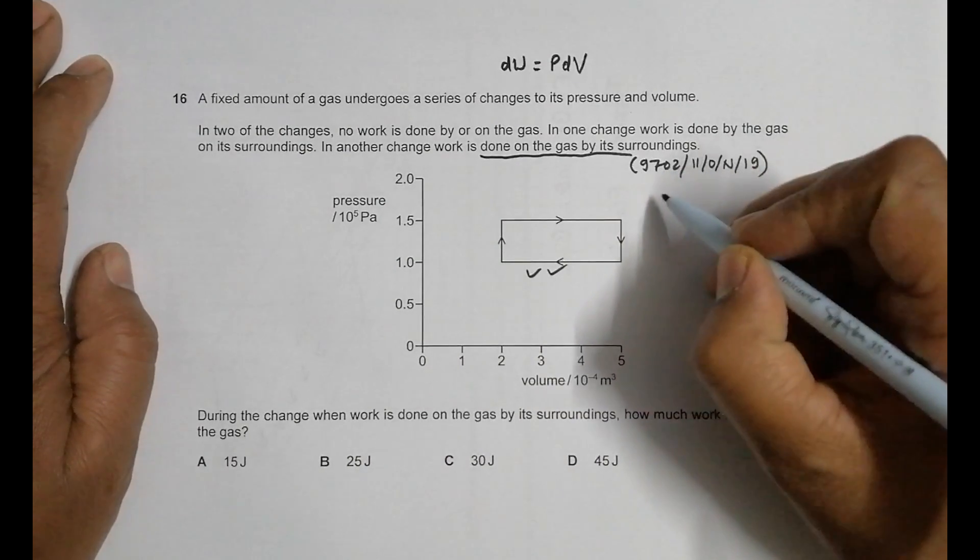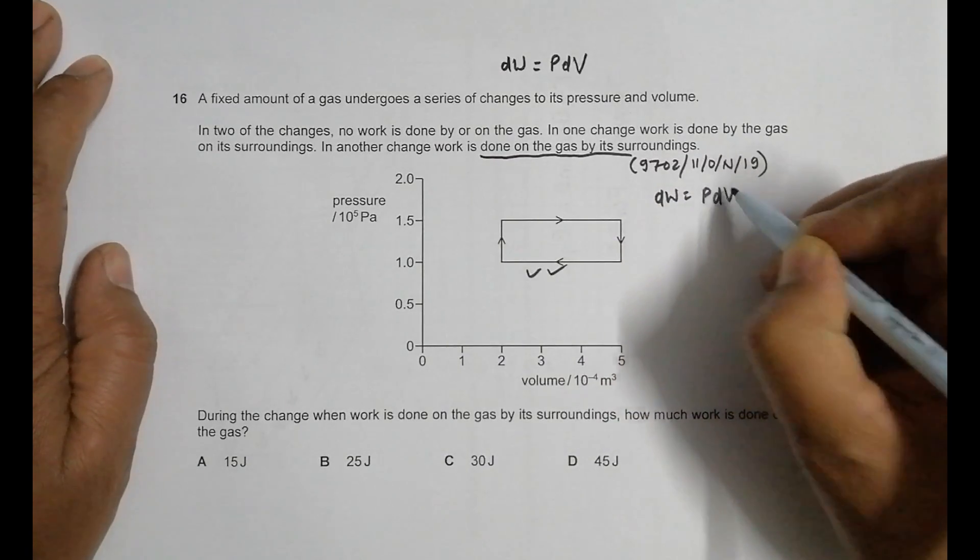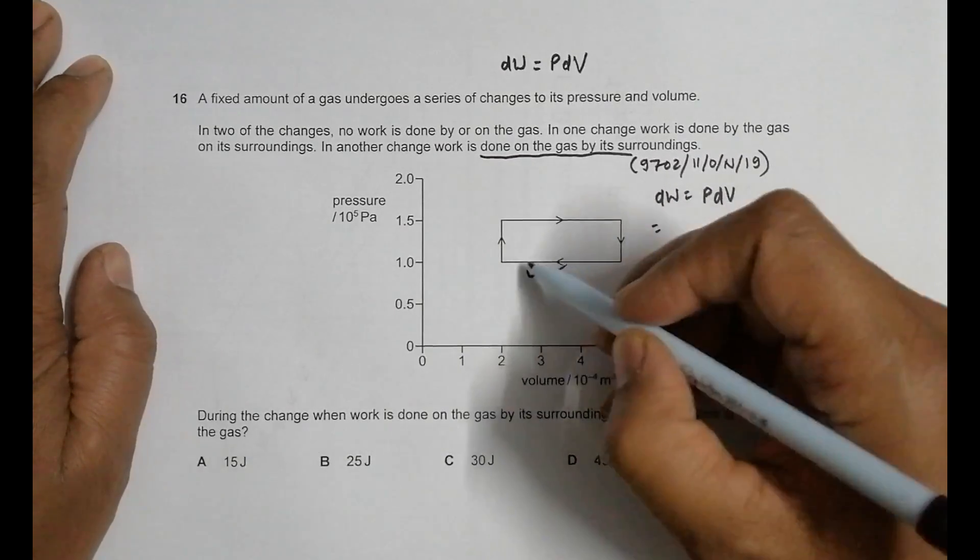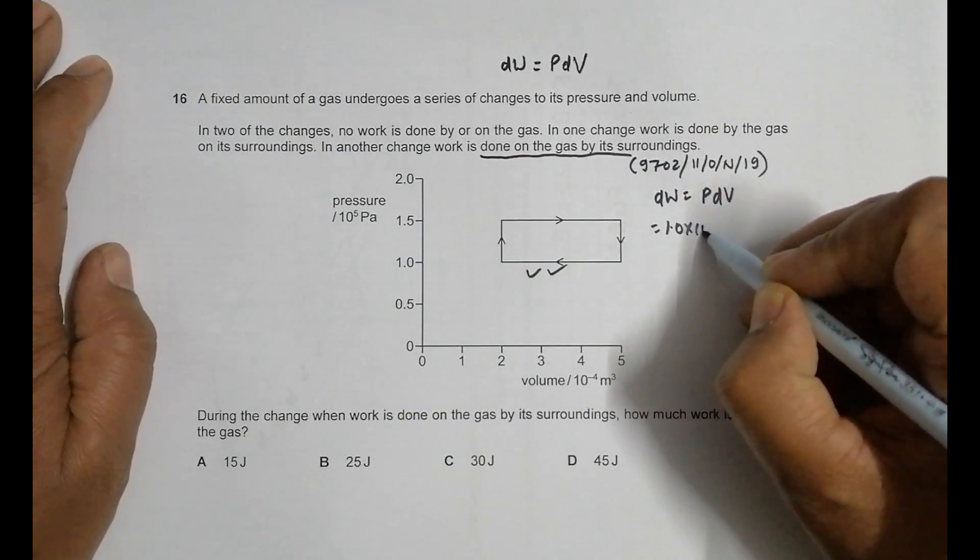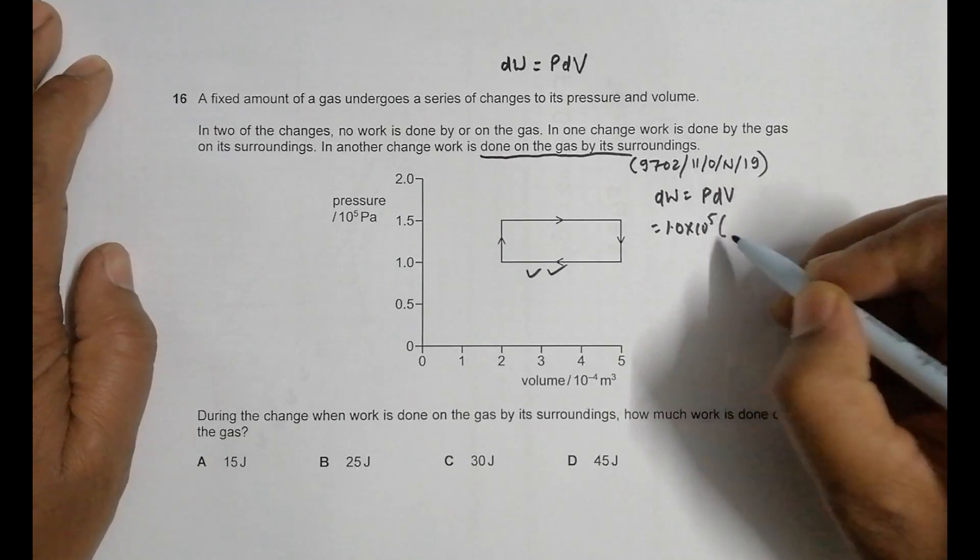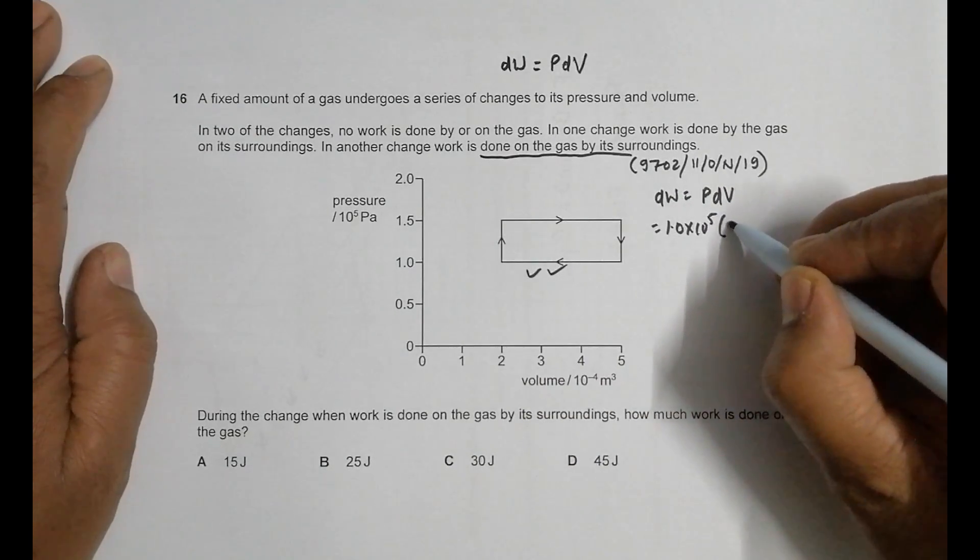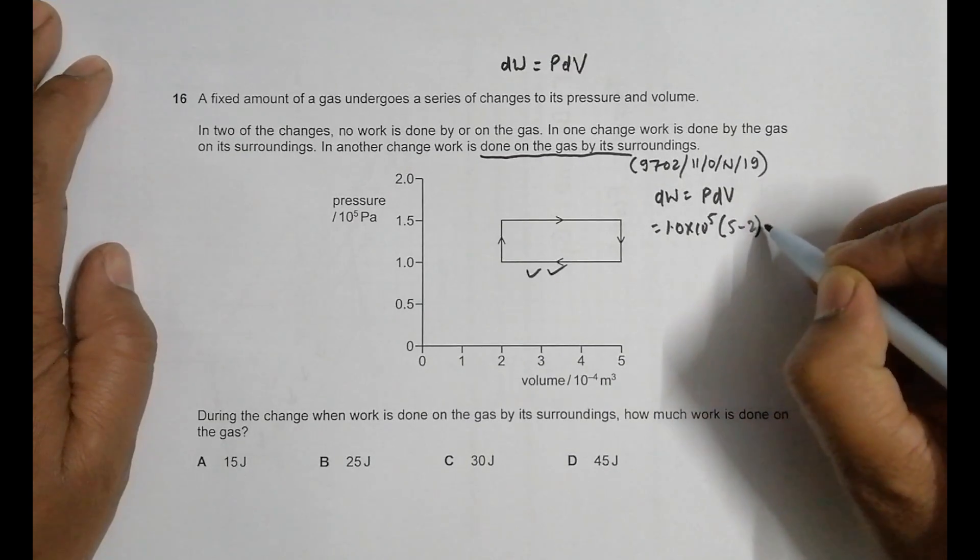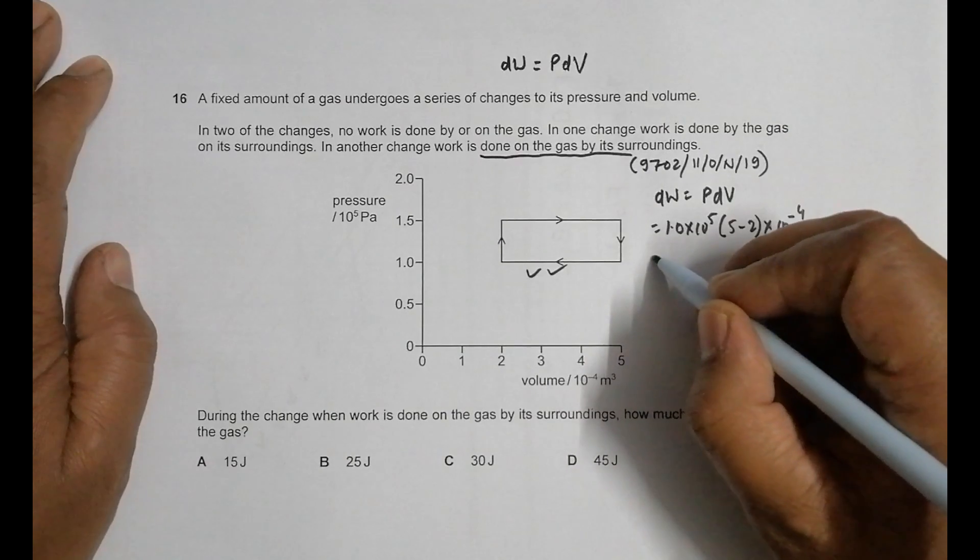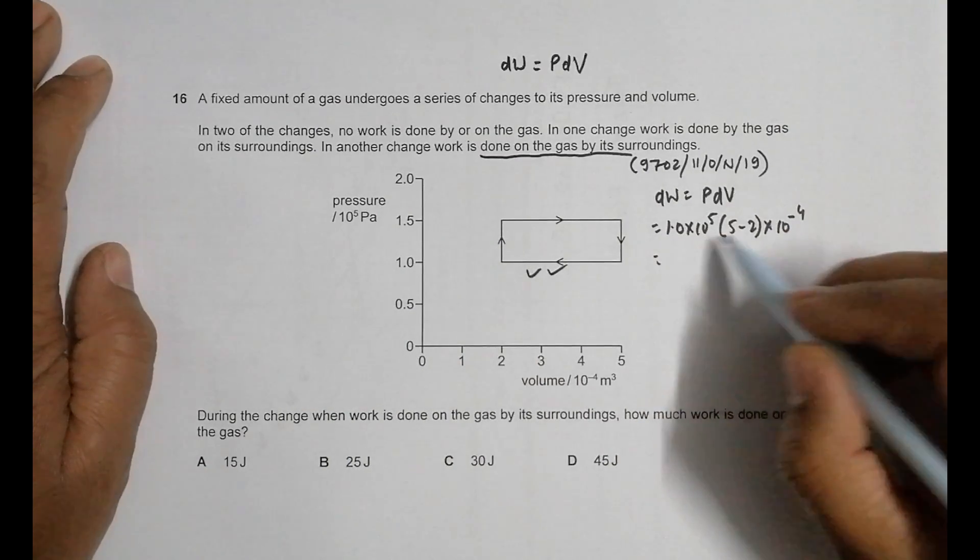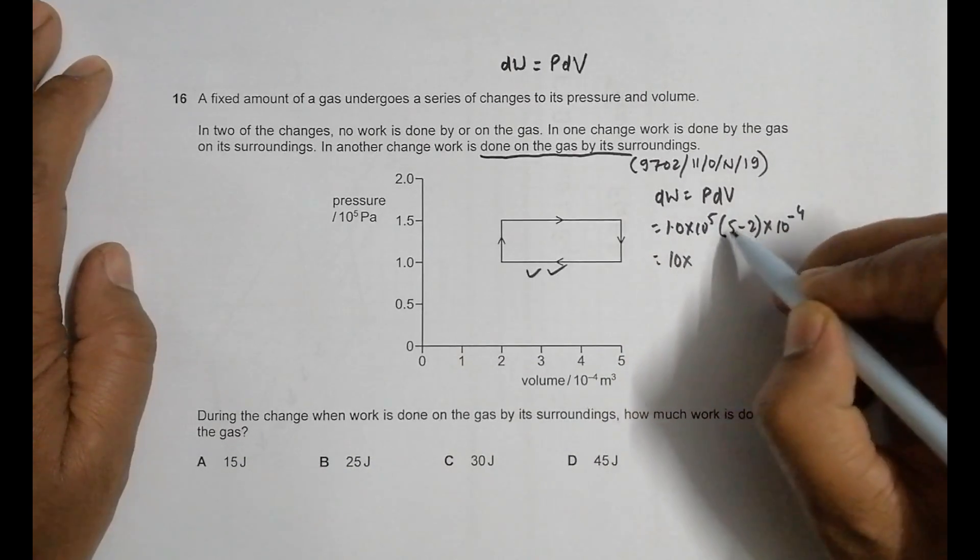How much work is done on the gas? dW equals P·dV equals the pressure, which is 1.0 × 10^5 Pascals. The change of volume is from here to here, 5 minus 2, which gives us 3 × 10^-4.